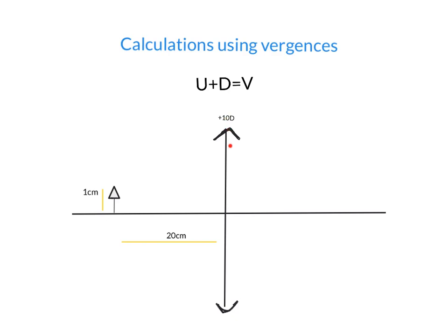I have here a lens. This is a representation of a lens, a 10-diopter lens. Here is a representation of an object. This object is 20 cm away from the lens and the object is 1 cm tall.